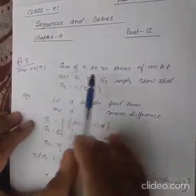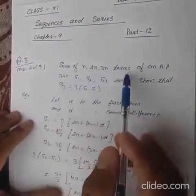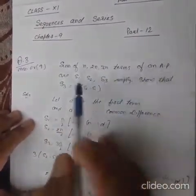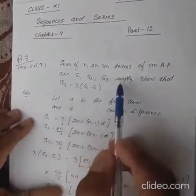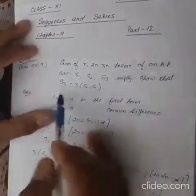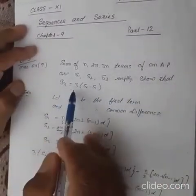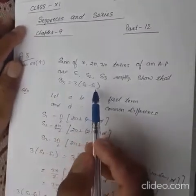The statement of the question is: the sum of n, 2n, and 3n terms of an AP are S1, S2, and S3 respectively. Show that S3 is equal to 3 into S2 minus S1.